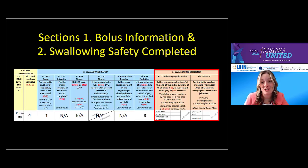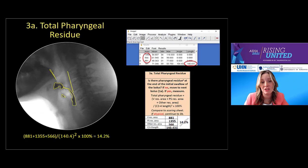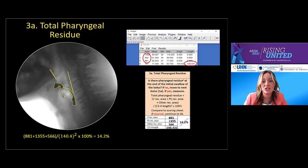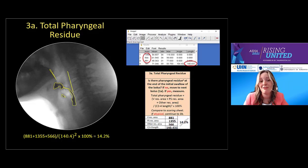We move on to swallowing efficiency — the third section in ASPECT-C, colored in peach. Specifically, 3A: total pharyngeal residue. It is clear that swallowing efficiency is a huge concern for this patient. Let's assess the extent of that impairment and try to understand potential mechanism. We see residue in the piriforms, the vallecula, and other areas such as the base of tongue. We use ImageJ to trace the residue. We measure the anterior inferior corner of C2 to C4 with the line tool, plug the values into the calculation on our worksheet, and that gives 14.2%, which is more than the typical reference value of 1.5% found on our scoring sheet.